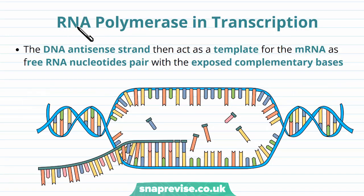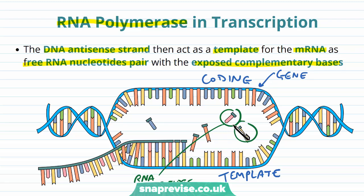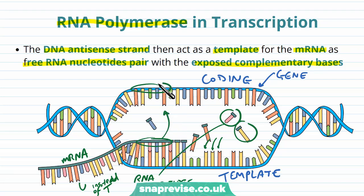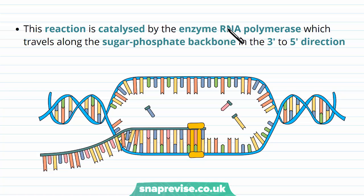Once the DNA is opened, we move on to the next enzyme: RNA polymerase. The DNA antisense strand acts as a template for the mRNA to be built on. Free RNA nucleotides pair with the exposed bases on the template strand using complementary base pairing and hydrogen bonds — with uracil replacing thymine. The RNA nucleotides are joined together by phosphodiester bonds, making a long continuous mRNA strand. This reaction is catalyzed by RNA polymerase.